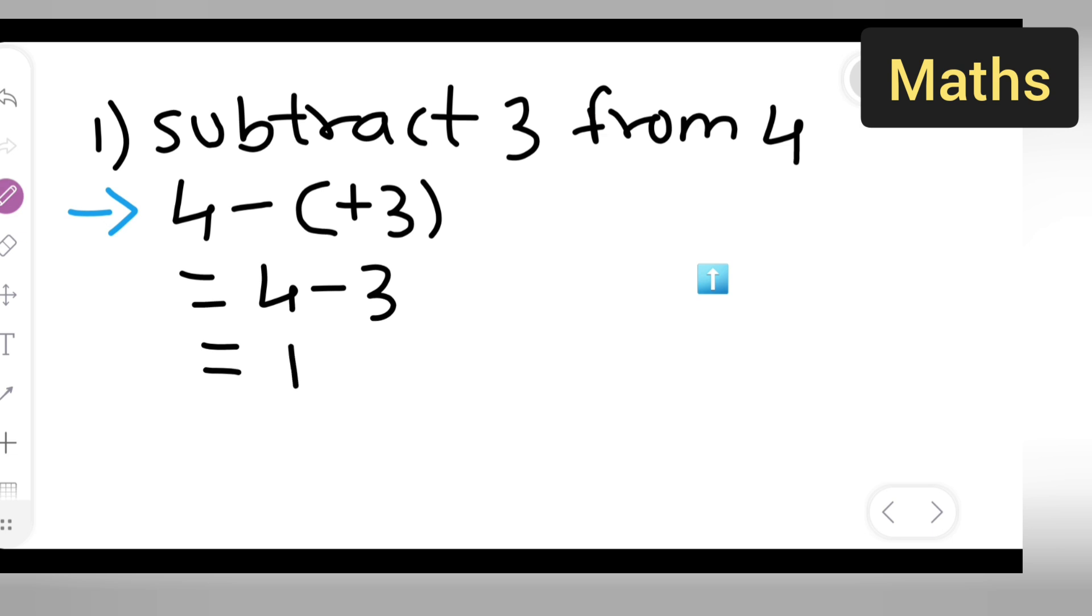Sign of the bigger number: because here 4 is positive, and the greater number is 4. For 3, minus is there. So which one is greater? 4 is greater, so we take the sign of the bigger number - positive 1.